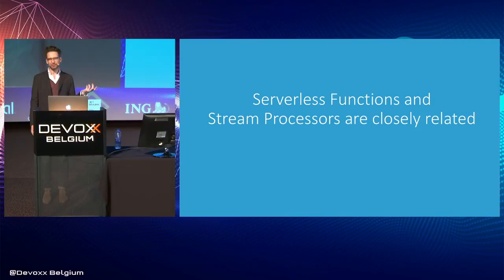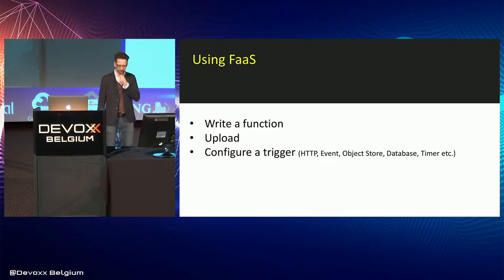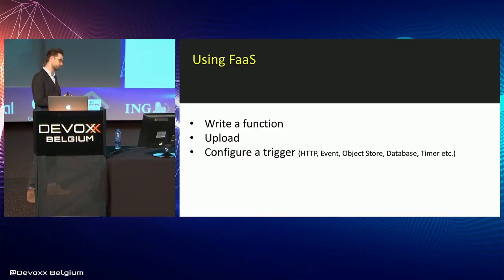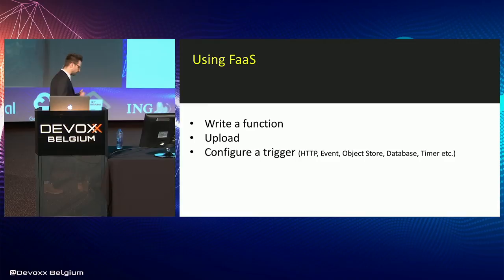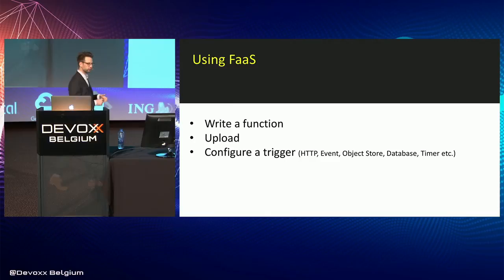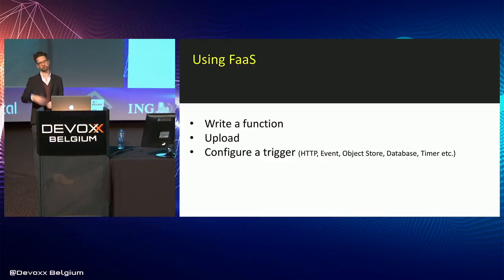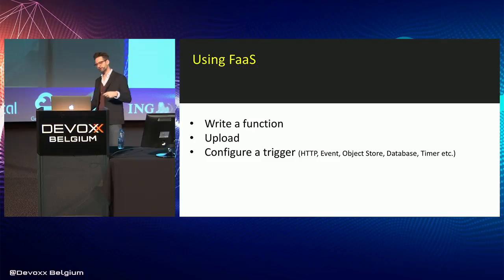I wanted to talk about serverless functions, because there's quite an interesting relationship between this idea of a serverless function and stream processing. A serverless function is a very simple function — you can write it in a number of different languages. It might do something like resize an image or send an email. You upload it to your cloud provider, they manage the execution for you. You configure some kind of trigger — an HTTP interface, a message queue, a write to an object store or a database — or you run these things on a timer. These are different ways to trigger the function.